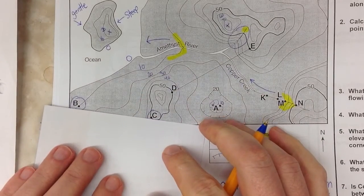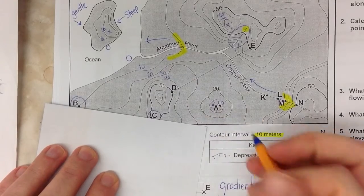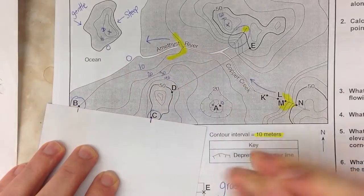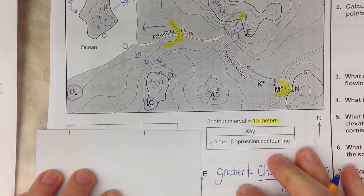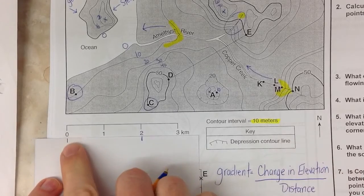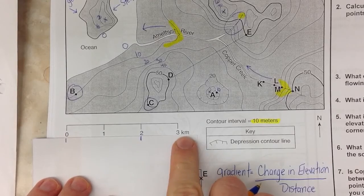You just basically just take a piece of paper, put it right in between the two points of B and C. What I'm going to do is I'm going to mark off where B is, mark off where C is on my paper. Bring it down to your scale. Try to line up your two points starting at zero. And it looks like my distance here is about two kilometers.